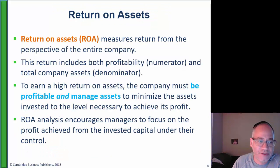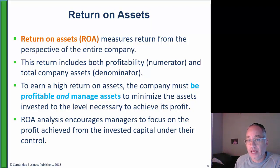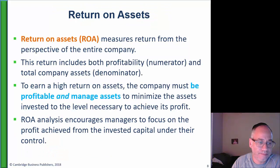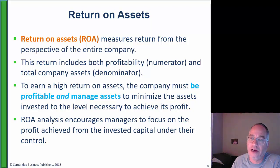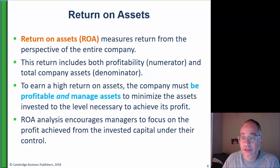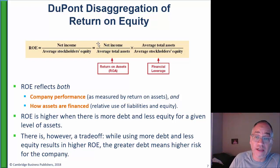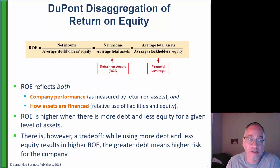Return on assets measures the return from the perspective of management or the entire company, and it equals net income divided by average total assets. To increase it, you need to do one of two things: either increase your net income or decrease your average assets — increase the numerator or decrease the denominator. Managers can focus on increasing net income or decreasing total average assets used, and either approach may help maximize return on assets.